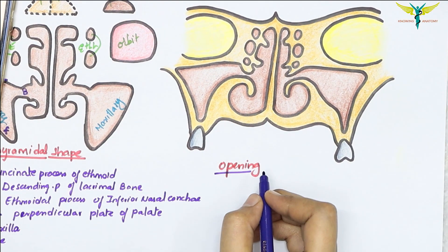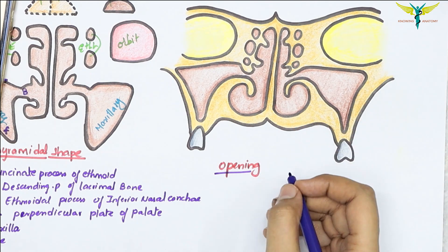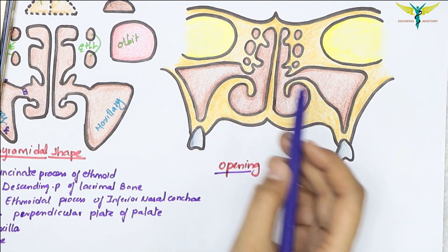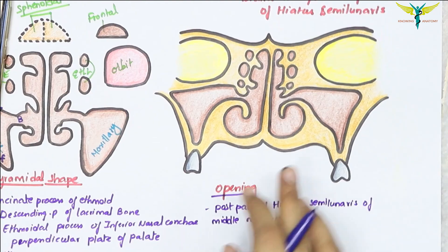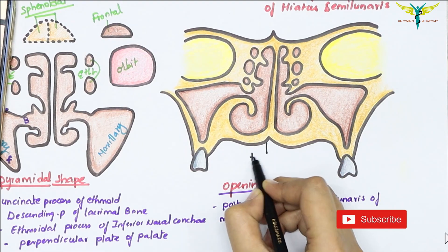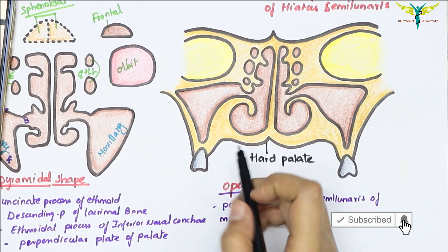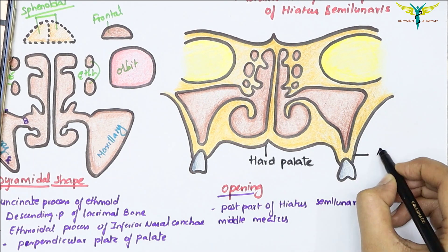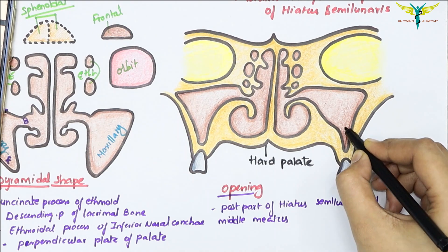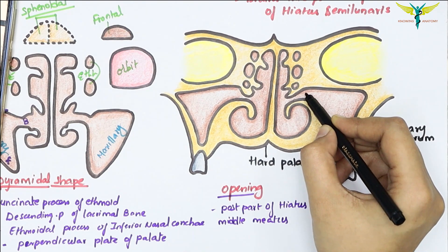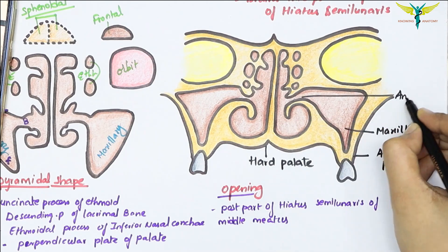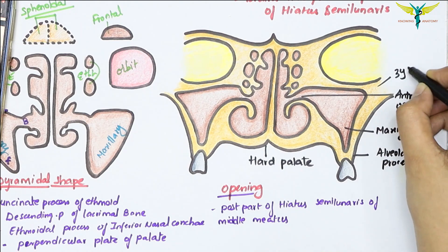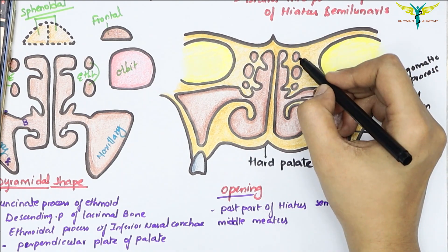The maxillary sinus opens into the hiatus semilunaris of the middle meatus, near to the roof of the sinus. In this diagram, this is the hard palate — for a video on development of the palate you can click the i button — this is the alveolar process, this is the maxillary antrum, this is the anterior ostium which is the opening, and this is the zygomatic process of the maxilla.